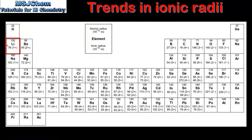By looking at the data we can see that positive ions are smaller than their parent atoms, and negative ions are larger than their parent atoms. We'll look at the explanation for this at the end of the video.